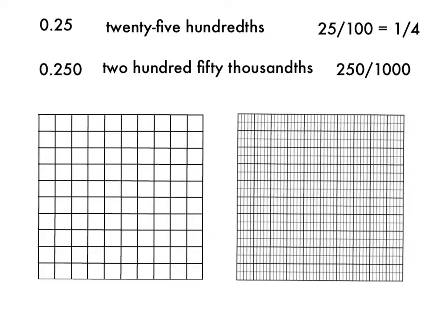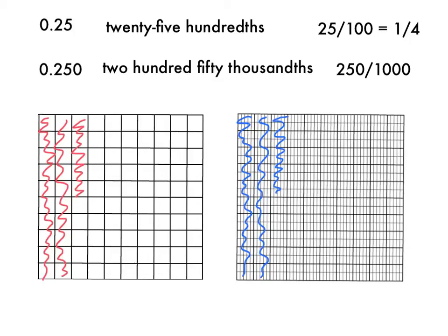Now I'm going to represent twenty-five-hundredths, which is the same as two-hundred-fifty-thousandths. Remember, twenty-five-hundredths is also the same as one-fourth. So one way I can represent twenty-five-hundredths is to shade in, on a hundredths grid, twenty-hundredths, and then five more hundredths. And on my thousandths grid, it would look exactly the same — two-tenths, that's twenty-hundredths, and then five more hundredths. As you can see, they are exactly the same. This is two-hundred-fifty-thousandths, and this is twenty-five-hundredths.